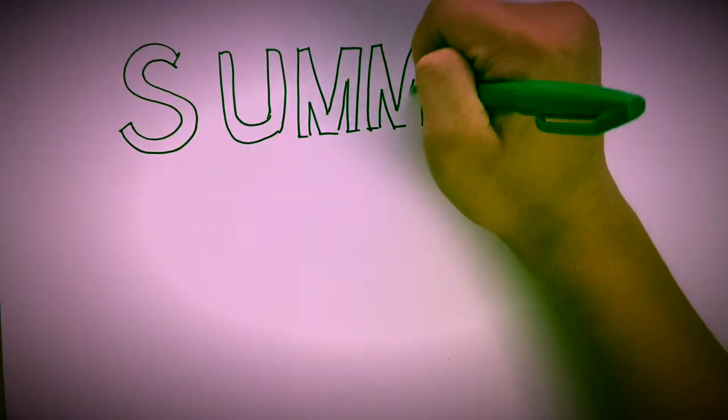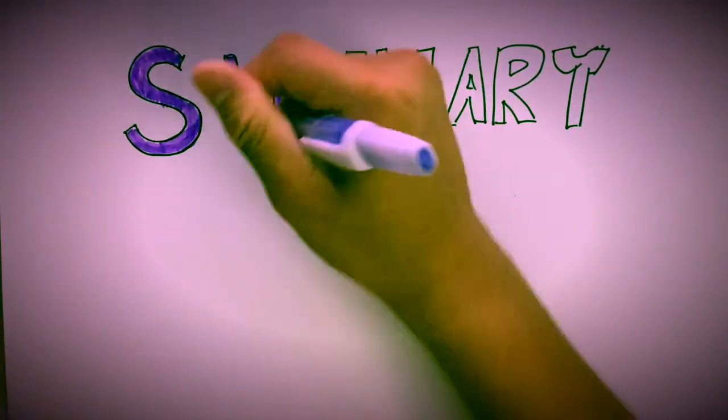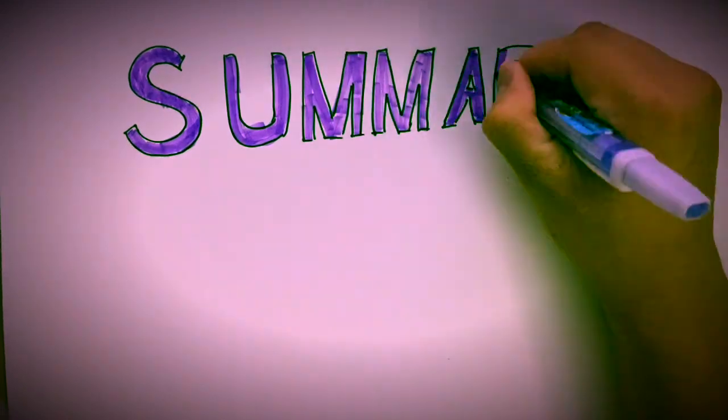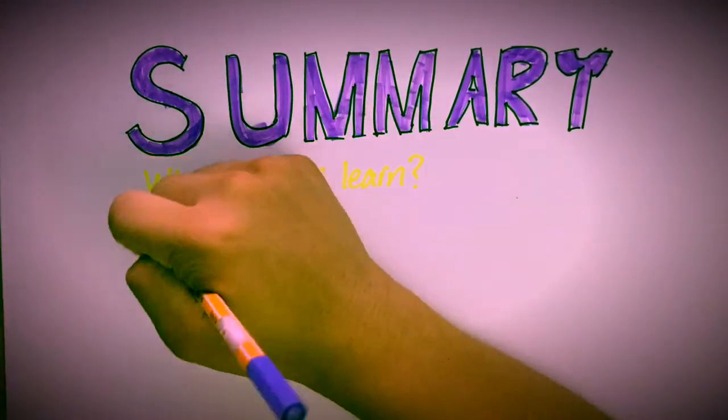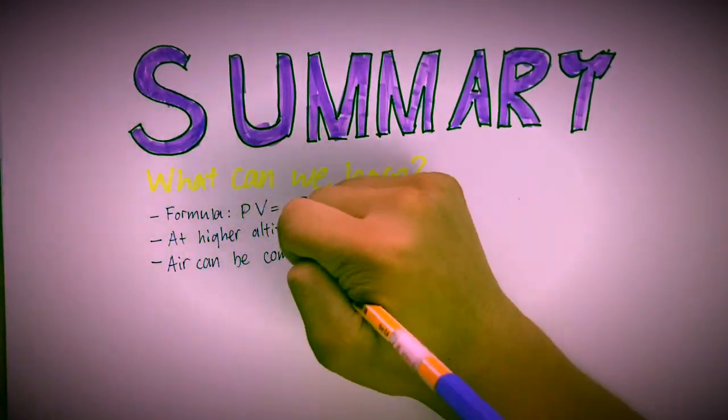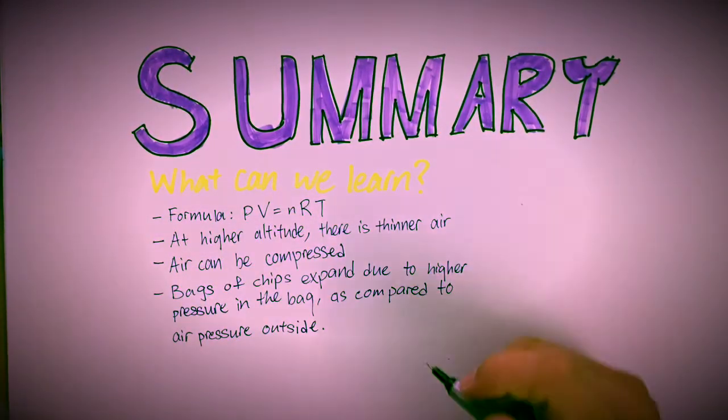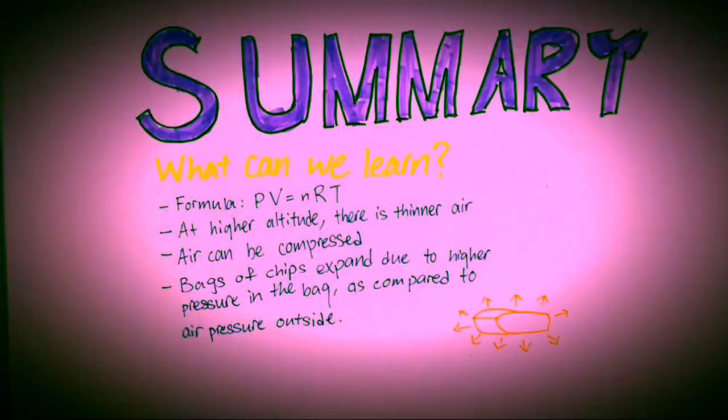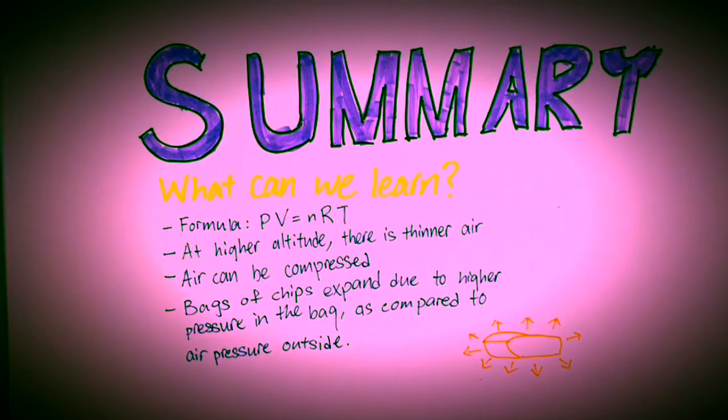To conclude, let's recap what this video has taught us so far. Air can be compressed. An ideal gas is a gas that obeys all the gas laws and the gas equation, PV equals to nRT. Next, at a higher altitude, the air is thinner. As a result, bags of chips expand due to the higher pressure in the bag compared to the surrounding air pressure.